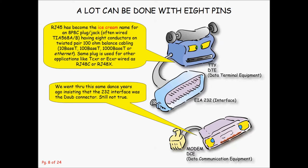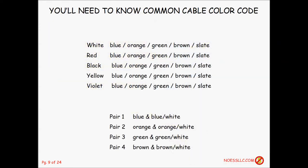We went through the same ridiculousness with the 232 interface, because everybody called the D-sub — the physical connector with 25 pins — the EIA 232 interface. Not true. You could put a 232 on something other than a D-sub. We're still doing this: somebody will hold up the D-sub end of a cable and say 'that's a 232.' Well, it might be electrically a 232, but the plug and jack have nothing to do with the 232 itself.